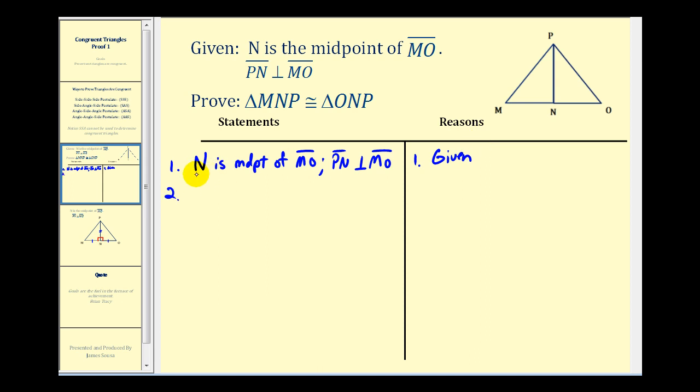For step two, let's deal with this midpoint. If N is the midpoint, we know that segment MN is congruent to segment NO. This is by definition of midpoint.